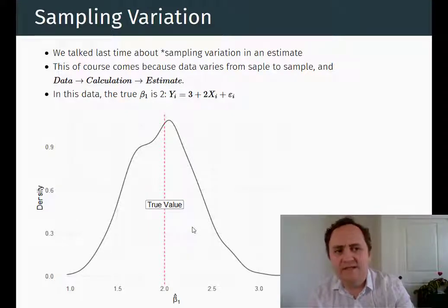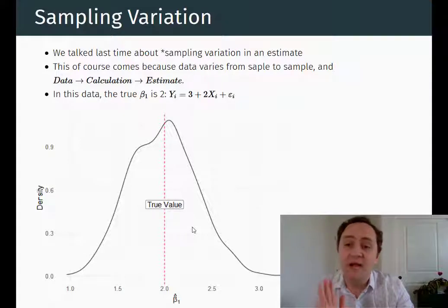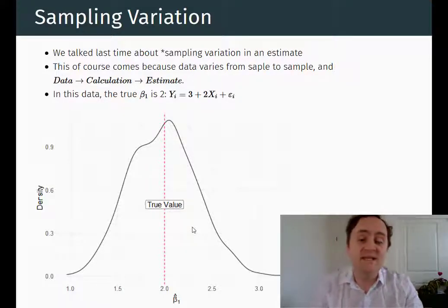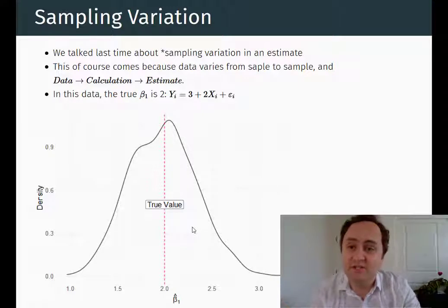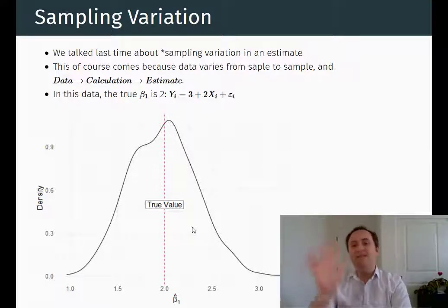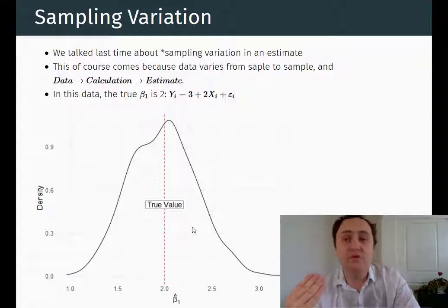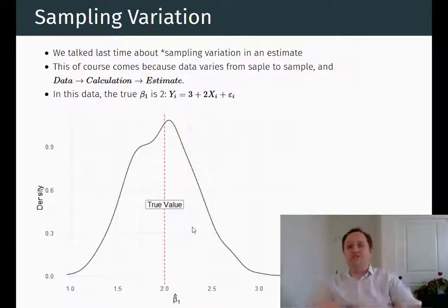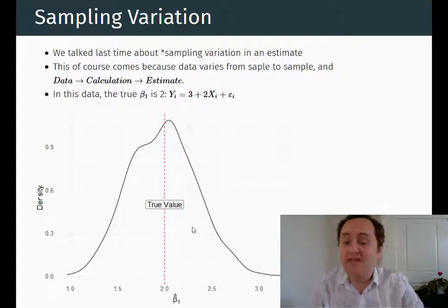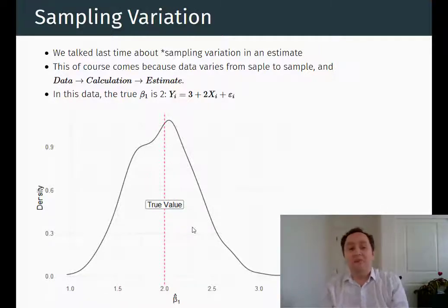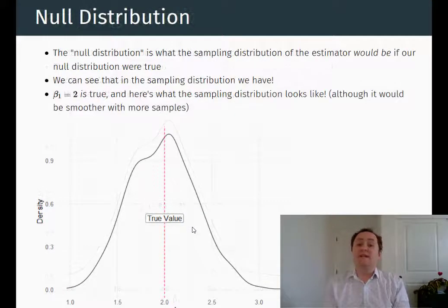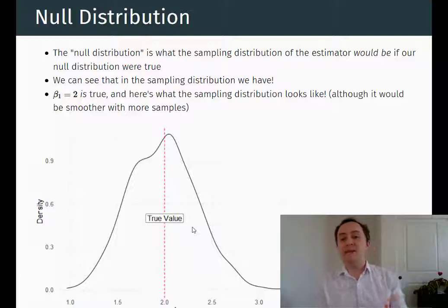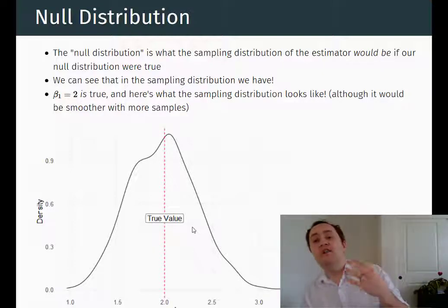Now let's think about the sampling distribution in the context of null hypothesis significance testing. What this is: we are going to try to take that sampling distribution and use it to eliminate certain values of the truth. We don't know what the truth is — it could be anything — but if we could rule out certain ranges of possible truths, then we will narrow down what we think the truth might be. That's the idea of null hypothesis significance testing.